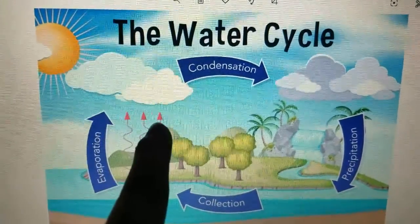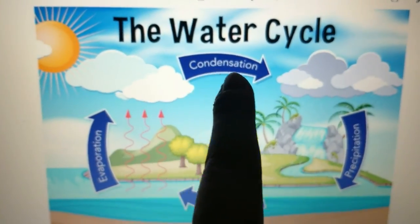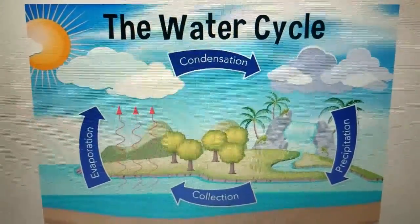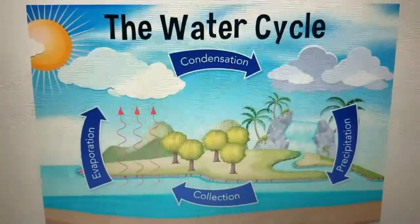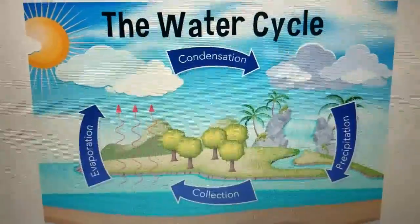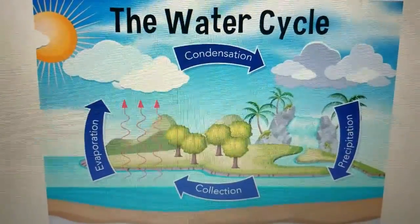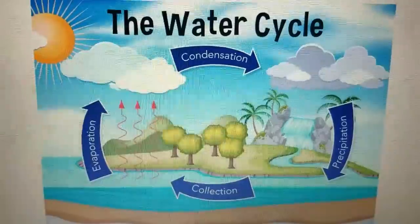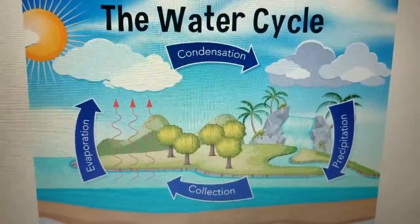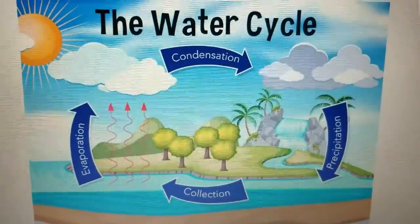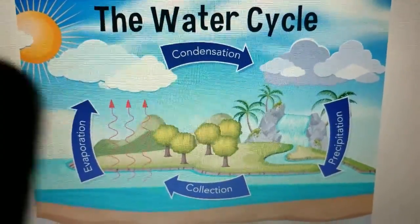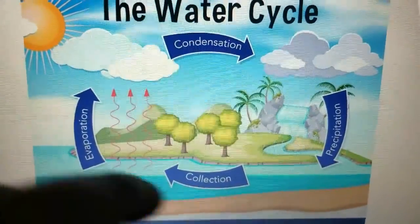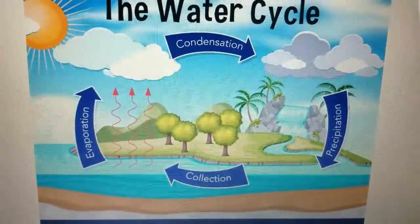Clouds are the part of the water cycle that we call condensation. As the water evaporates from the ground and up into the clouds, the clouds get bigger and heavier and fuller. Those water droplets come together and make really big water droplets, and then we cycle right back over to precipitation. It just goes around in a big circle.